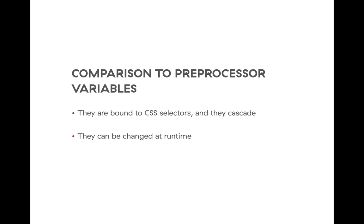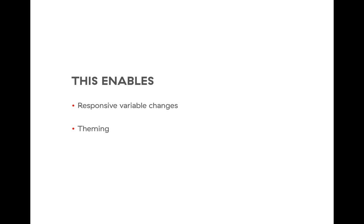How does this compare to preprocessor variables? The key difference is that CSS variables are bound to CSS selectors and they cascade, so you can scope them to specific components. The big thing is they can be changed at runtime — via JavaScript, media queries, or anything else. This enables responsive variable changes that aren't available with preprocessors. So if you want something to look very different on mobile, you can do it in one place with a simple media query. This also makes theming a lot easier, whether for entire websites or simple components.